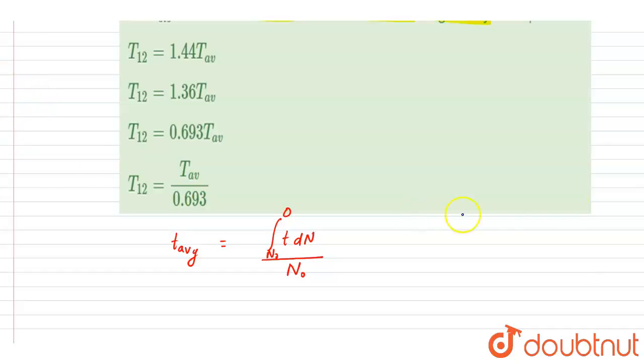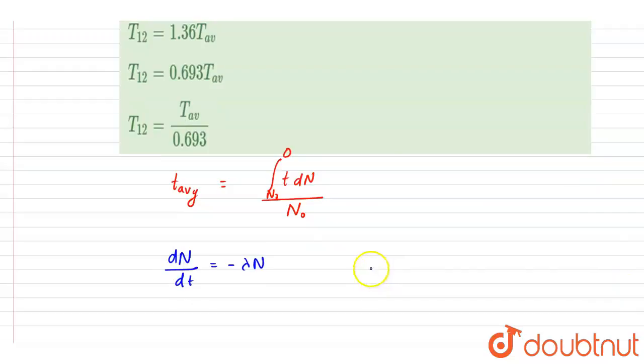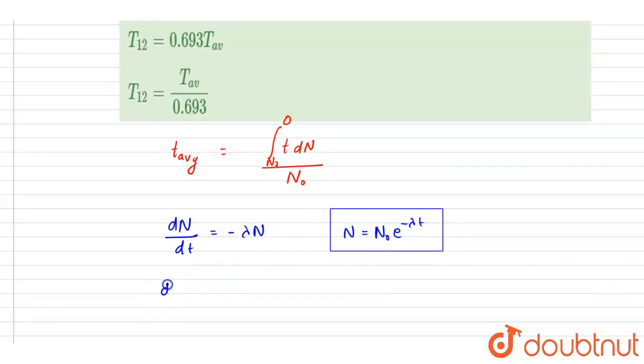We know that the rate of disintegration is constant and proportional to the number of nuclei present. The proportionality constant is the decay constant lambda. By integrating this expression, you will get the number of nuclei at any instant equal to N = N₀e^(-λt). From here, you can write down the value of dN as -λN dt.